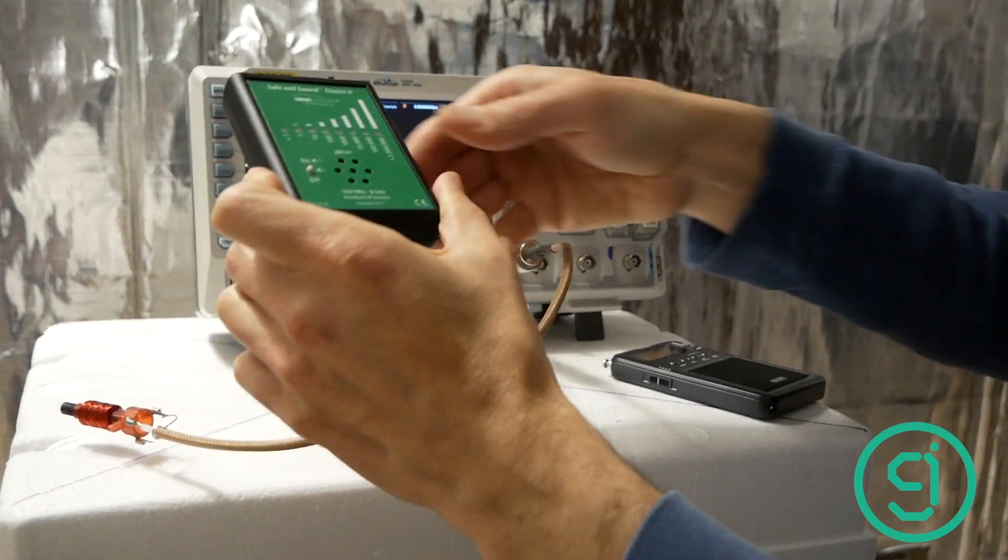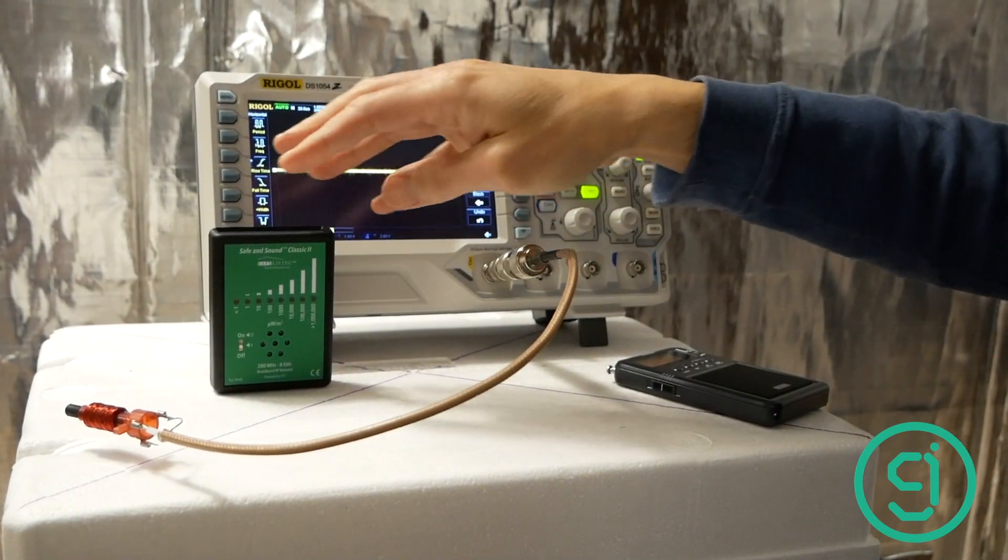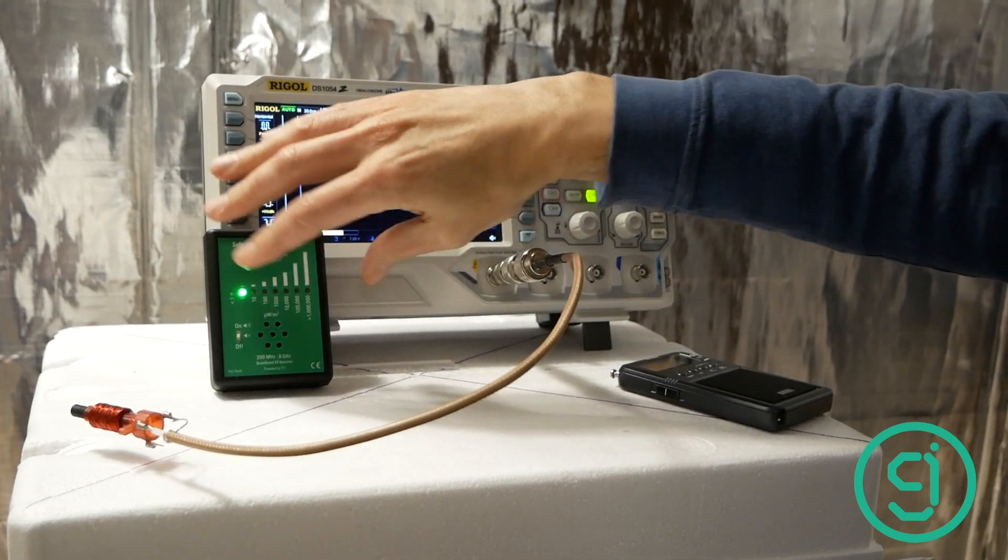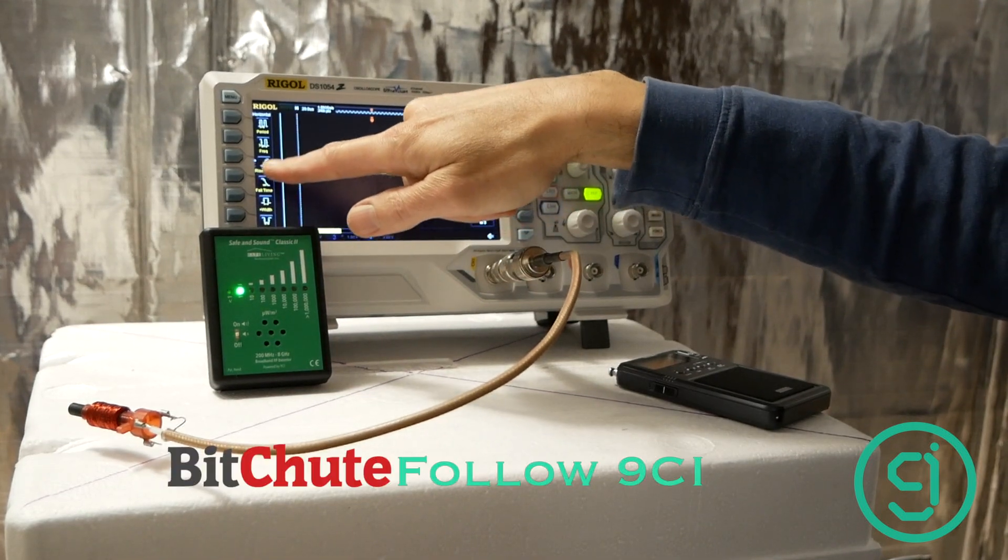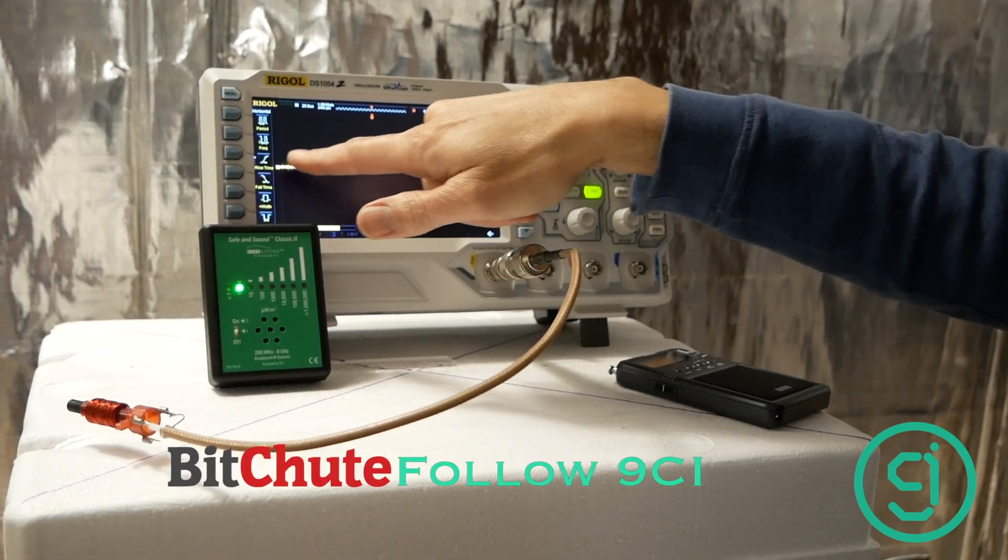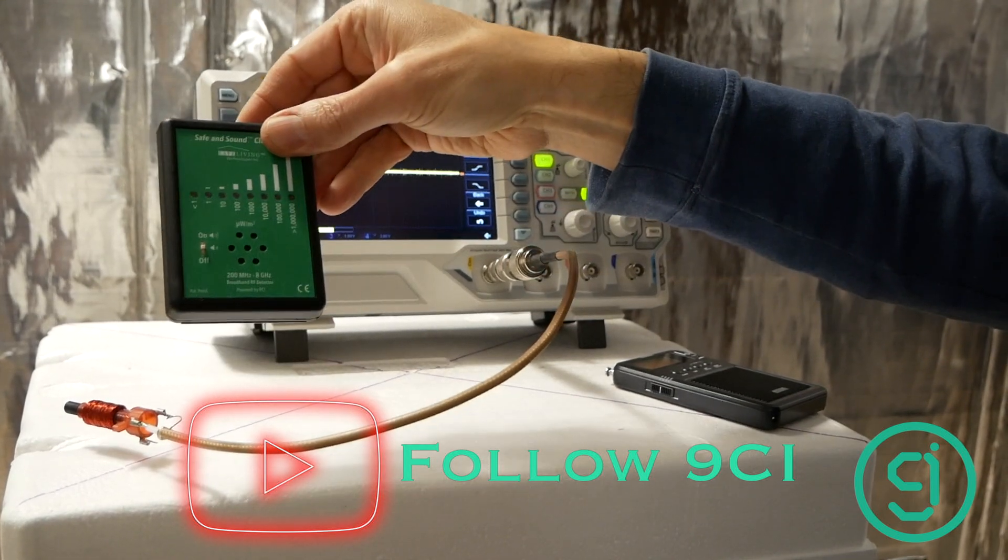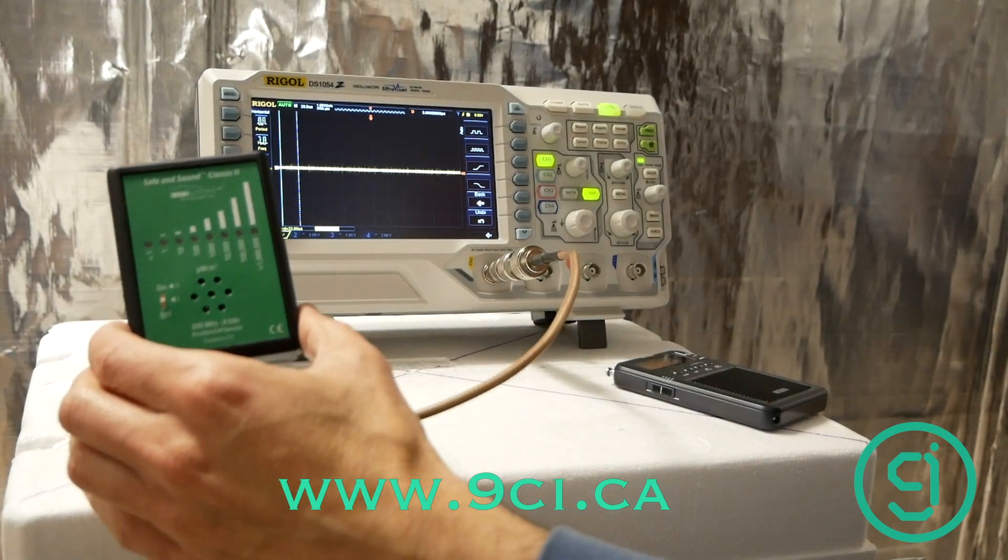So we've tested this with a spectrum analyzer. There is nothing any of our test equipment can measure that's coming off of this. Now, interestingly enough, the Classic II is actually picking up some of the EMF from the display on the oscilloscope. But this device itself is not radiating anything at all.